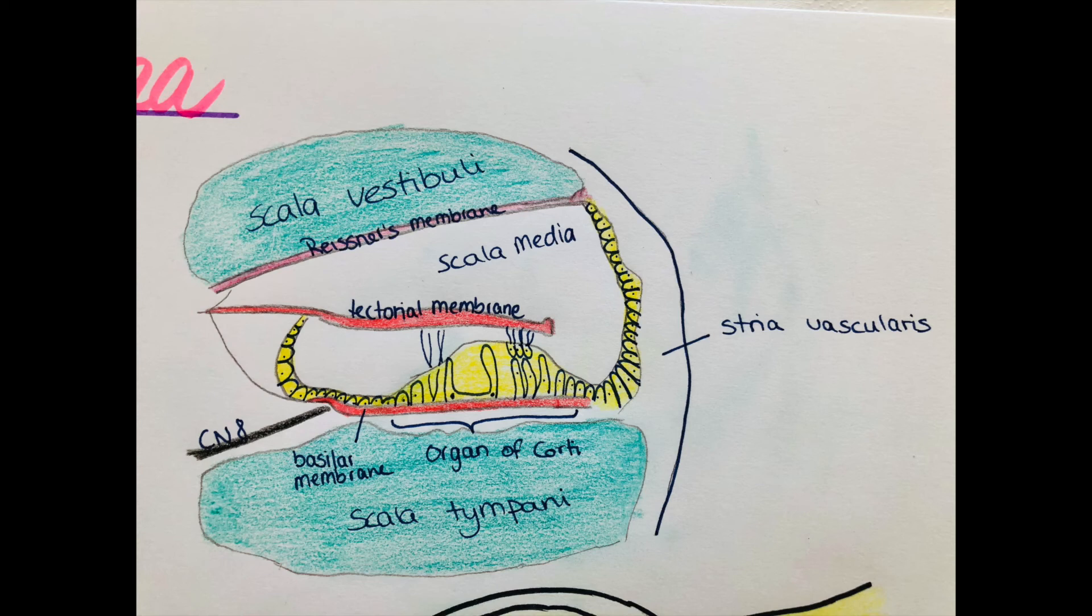When these hair cells move and bend these ion channels open and potassium and calcium from the endolymph moves inside the inner hair cells. This leads to a depolarization of the cell and the glutamate containing vesicles open. This leads to a propagation of the generated action potential via spiral ganglia to the brain.